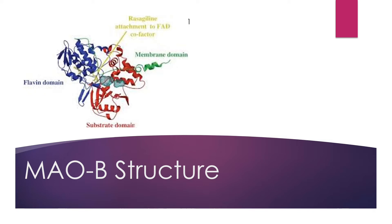MAOB is a dimer of two identical polypeptide chains, each consisting of 520 amino acids. Approximately the last 31 amino acids in each subunit form an alpha helix that is responsible for the integration into the mitochondrial outer layer membrane, as depicted here.